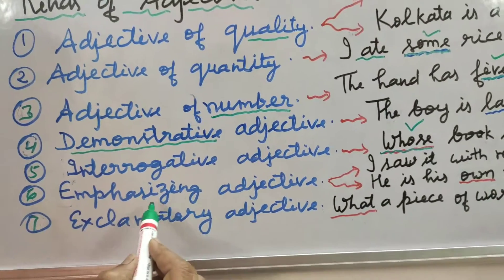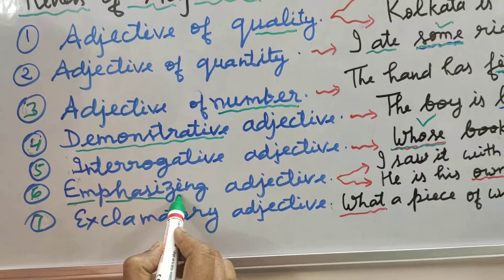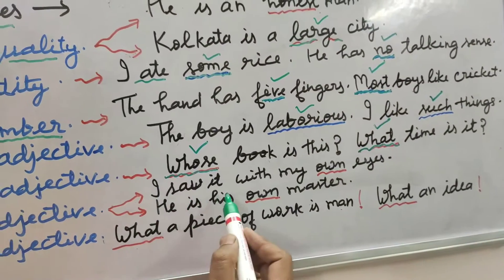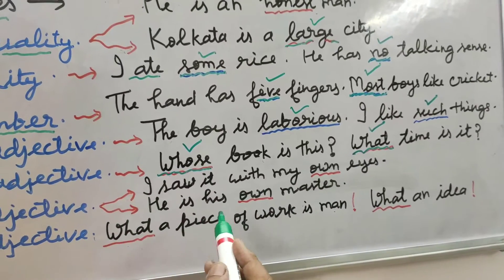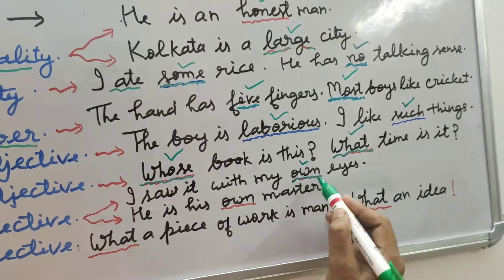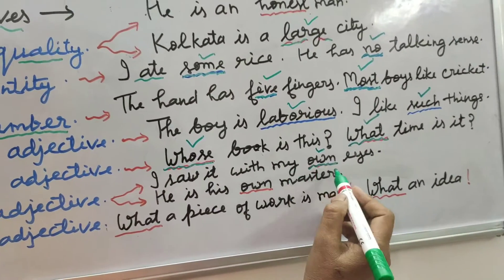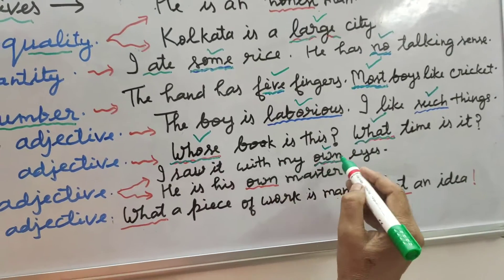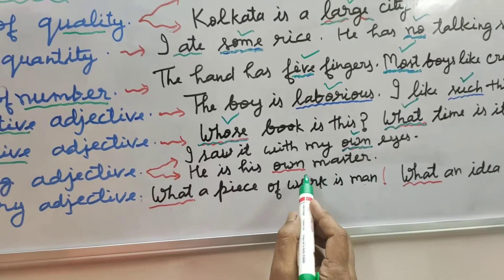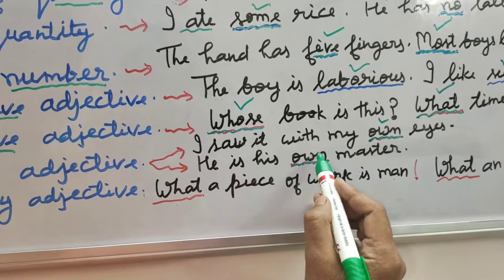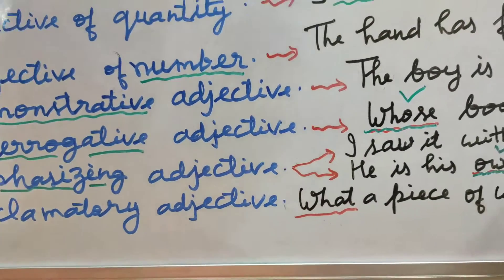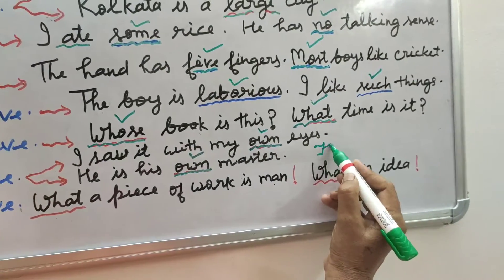The next is emphasizing adjective — it is showing emphasis, focusing especially on something. 'I saw it with my own eyes' — I witnessed that thing especially by myself. It means 'own' is the emphasizing word. 'He is his own master' — the person is driving himself, so he is his own master. Here the word 'own' is the emphasizing adjective.